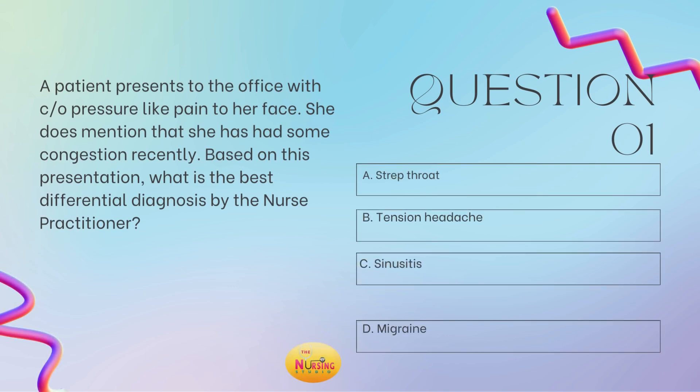Question number one states: a patient presents to the office with complaints of pressure-like pain to her face. She does mention that she has had some congestion recently. Based on this presentation, what is the best differential diagnosis by the nurse practitioner? Is it A, strep throat? B, tension headache? C, sinusitis? Or D, migraine? Take a moment and tell me what you got in the comments.